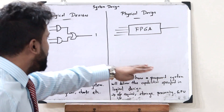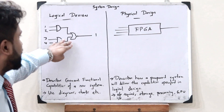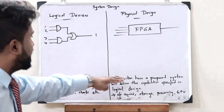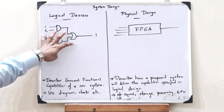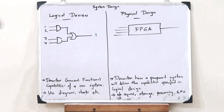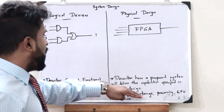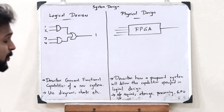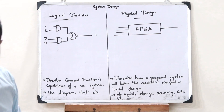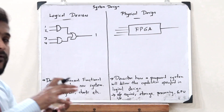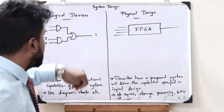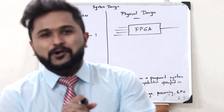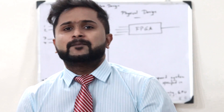Physical designing describes how a particular proposed system will deliver the capabilities specified in the logical design. It specifies the number of inputs and outputs required, the storage, the processing capability, the GPU, etc. — how we implement the logical design on a physical device. That is simply what we refer to as physical designing.